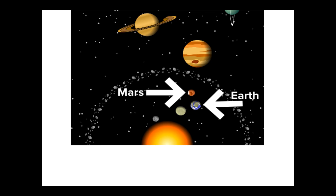Earth and Mars are both in the inner solar system. They're the third and fourth planets.